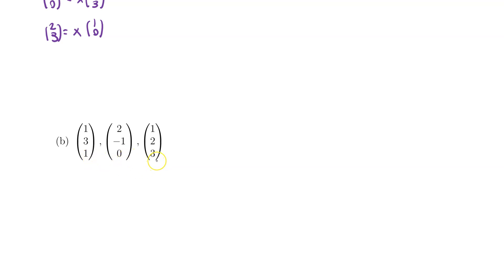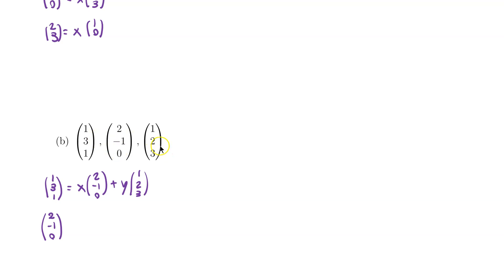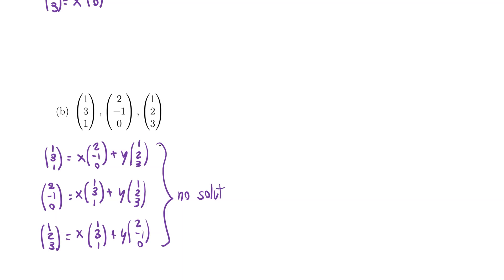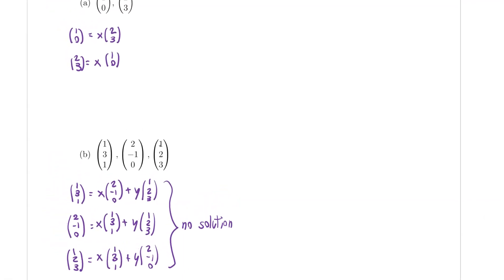For example, if I have three vectors, I have to check that the first vector is not a linear combination of the other two — I try to solve that equation and see that there is no solution. I also have to check that the second vector (2, -1, 0) is not a linear combination of the other two, and that the last vector (1, 2, 3) is not a linear combination of the other two. So I need to check that all of these systems have no solution.